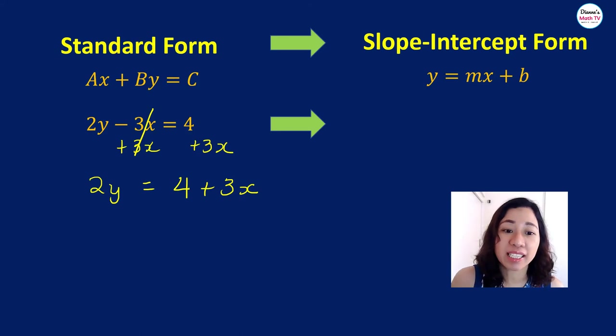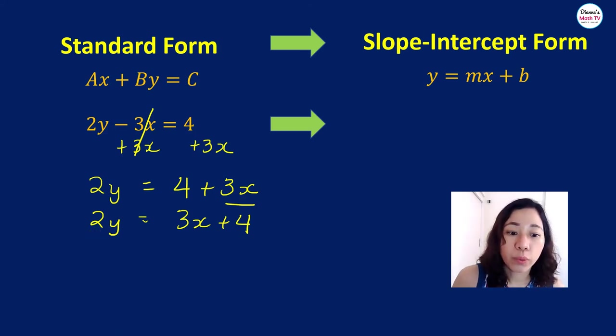But of course, I want to write it in such a way that x comes first. So we will write it as 3x plus 4. And then, what is happening here? 2 is multiplied to y. We only want to have a y here. So what will we do? If 2 is multiplied to y, how do we get rid of 2? We divide both sides by 2.